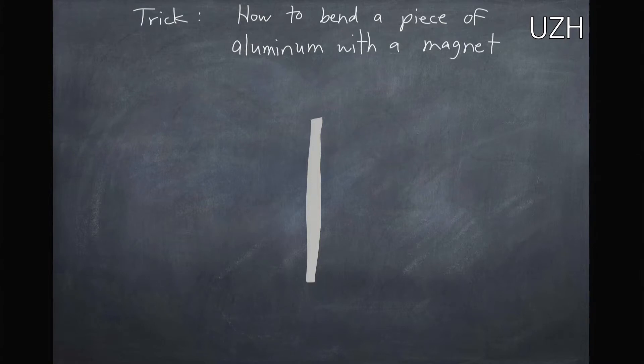Well first let's have a look at the equations. So here's our trick, is how to bend a piece of aluminum with a magnet. Here's our piece of aluminum. Aluminum is not magnetic, but maybe we can come up with another way.